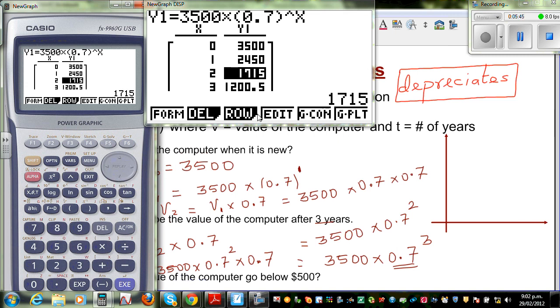So after two years, it is 1,715. That is, you can do that on a calculator, which is 3,500 times 0.7 squared will give you this. So after three years, it is 1,200.5. After four years, it is 840. After five years, it is 588 point, and so on. So this is how it goes.